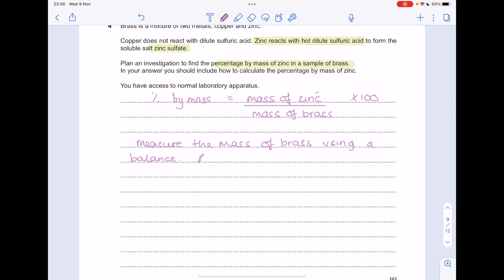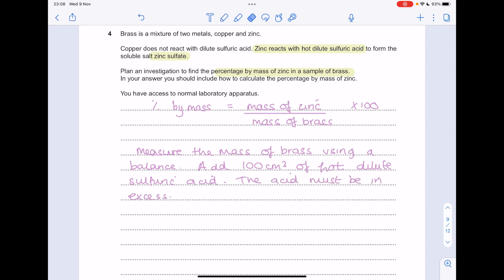Then we need that zinc to react. So add, let's say, 100 centimetres cubed of hot dilute sulphuric acid. The key thing with the volume of sulphuric acid is you need to force all that zinc to react, so the acid must be in excess. Now, in order to work out your mass of zinc effectively, because your brass is your zinc and the copper, if you force that zinc to react with the sulphuric acid, what you'll have left, that mass will be the copper, and you take that away from the original mass to work out the mass of zinc.